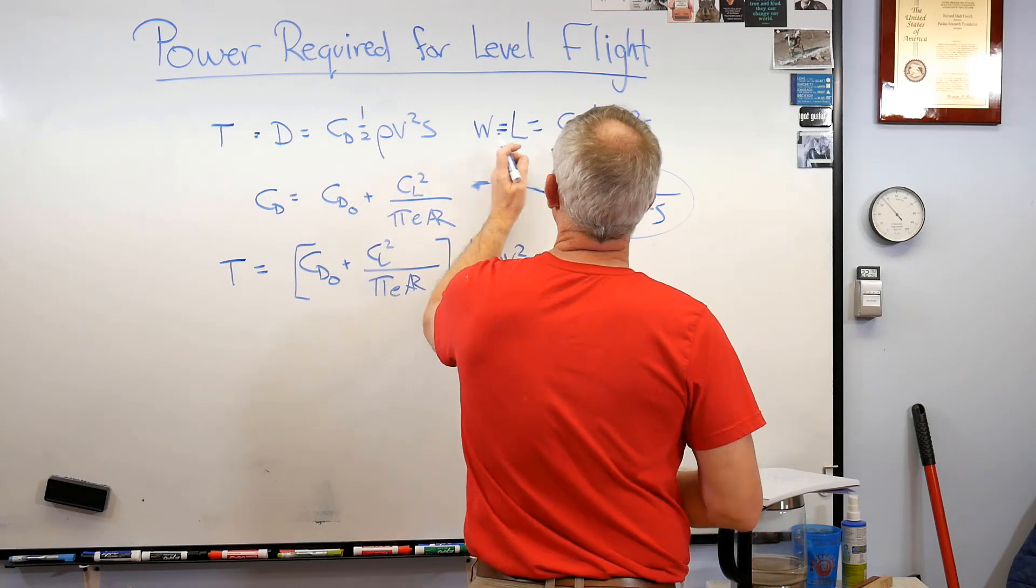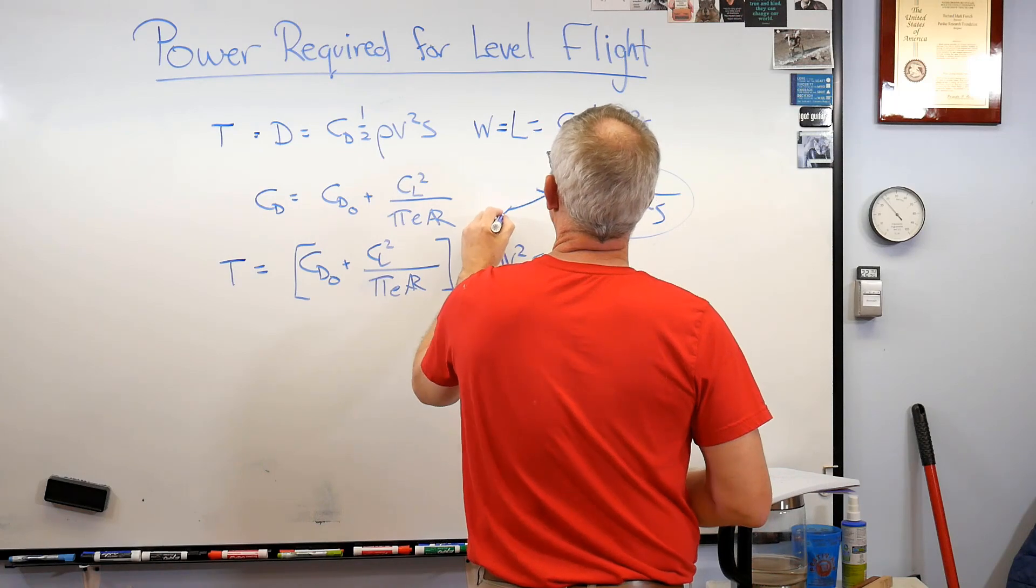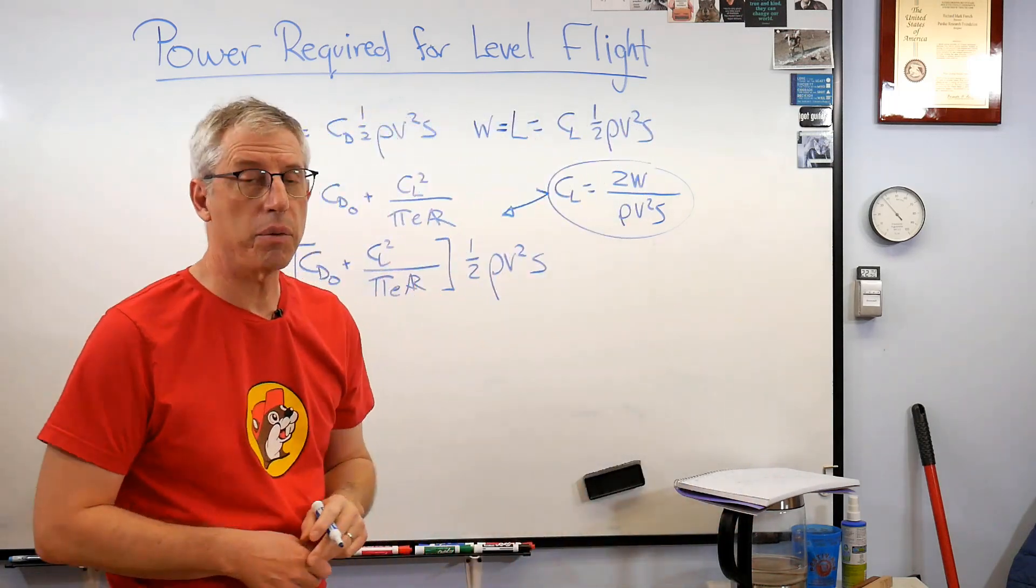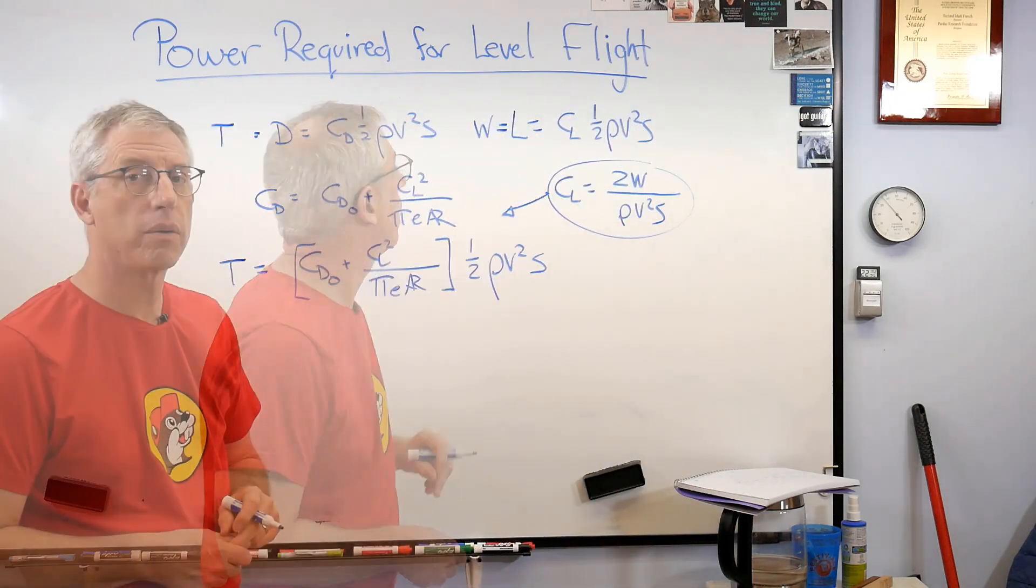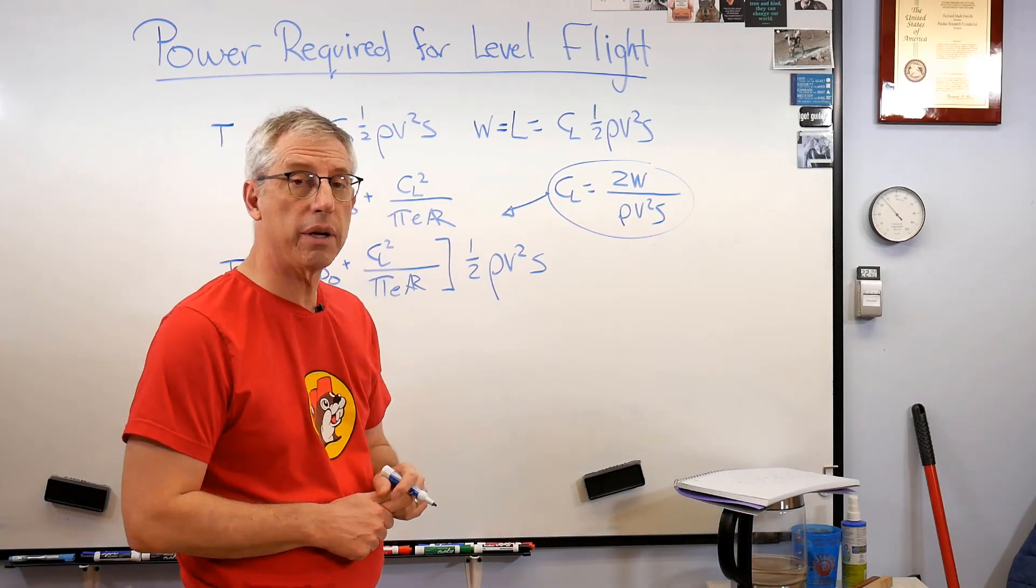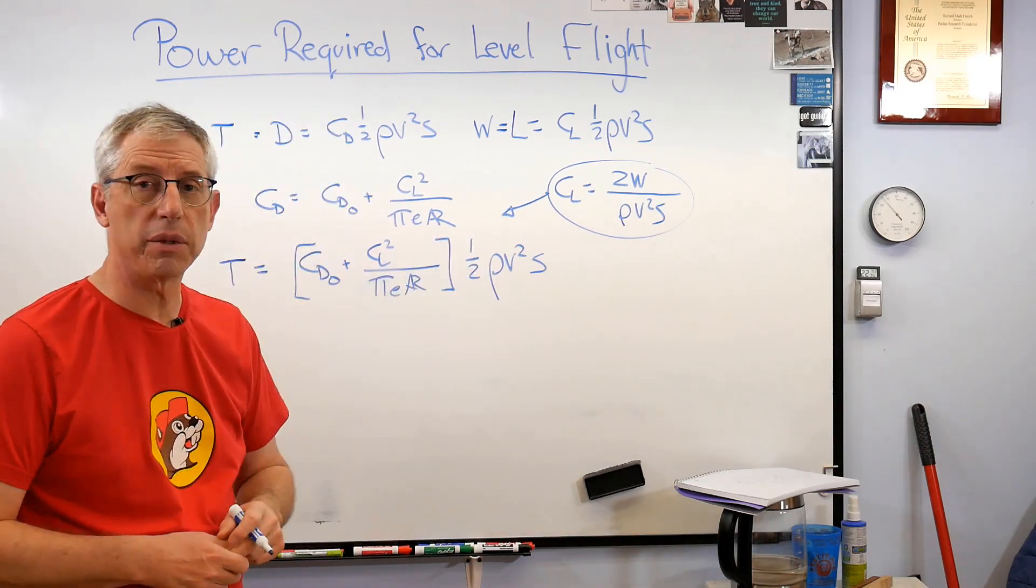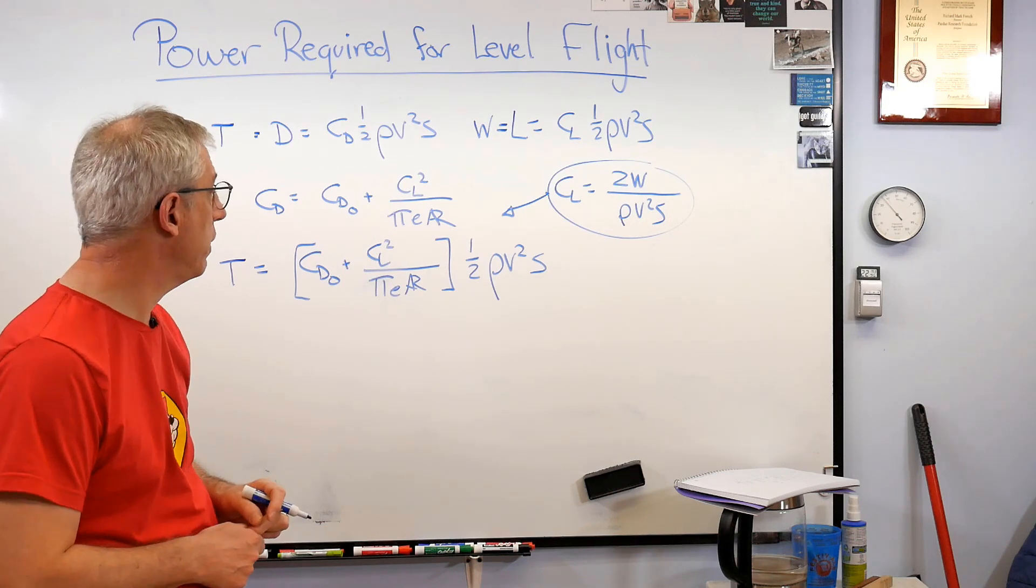So let's just take care of that right now. CL looks like it's going to be 2W over rho v squared s, that looks okay. So that expression right there is going to get substituted in right there.